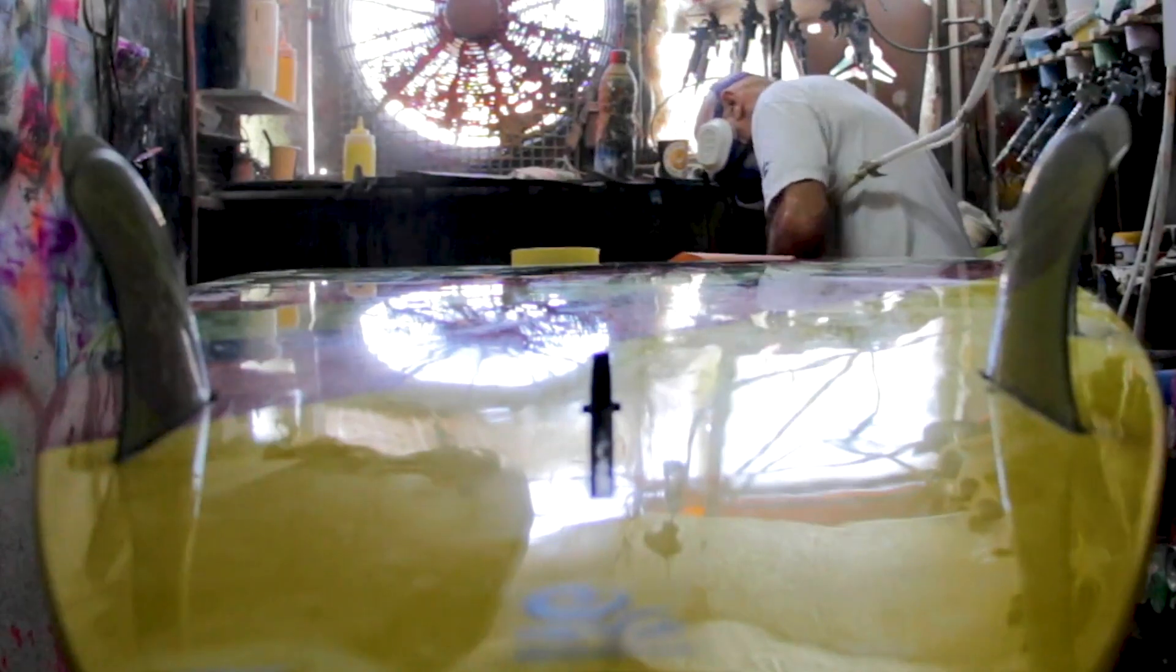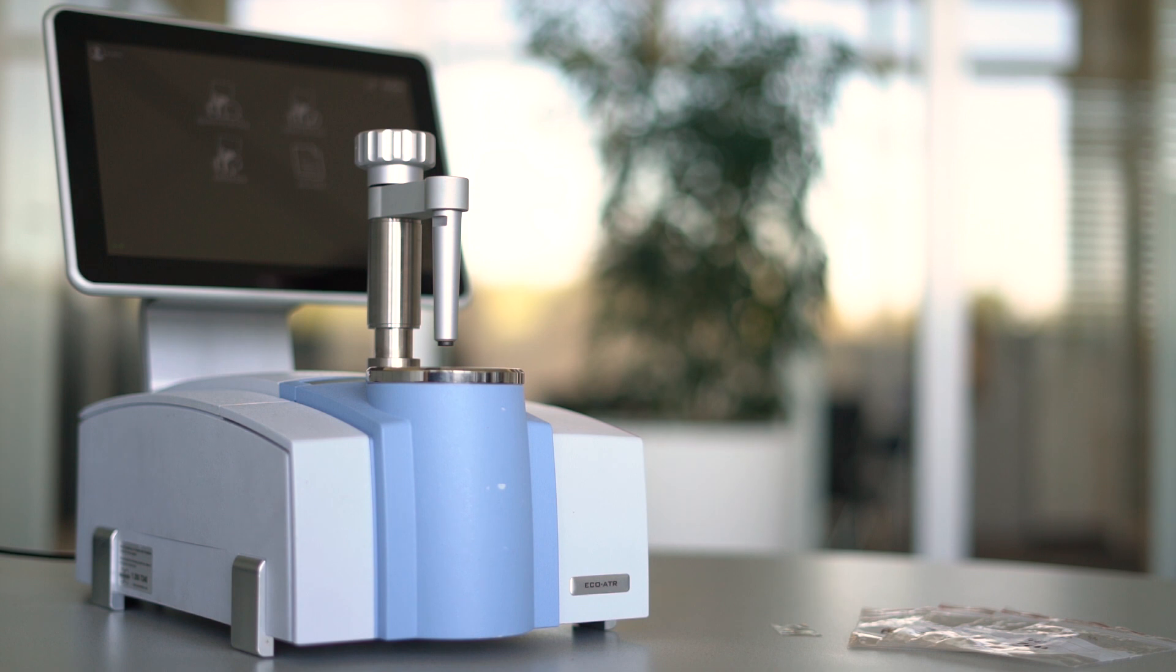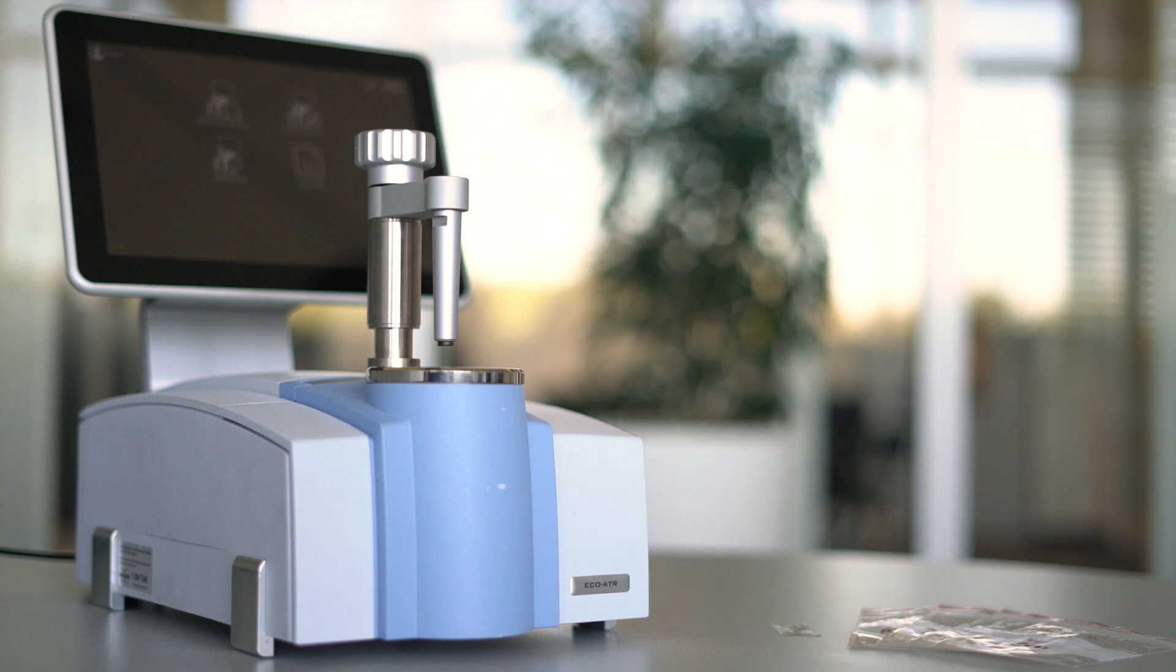To ensure that your coatings perform safely and reliably, careful quality control is vital. Infrared spectroscopy is a powerful and established analytical method and a smart choice for QC/QA for thin layers of polymers.